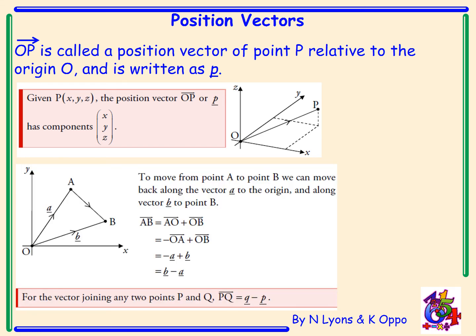Again, we have a coordinate diagram where we have vector a and b. If we want to move from point a to point b, we can move back along vector a to the origin and along vector b to the point b. Basically, to find vector AB we simply do b minus a.